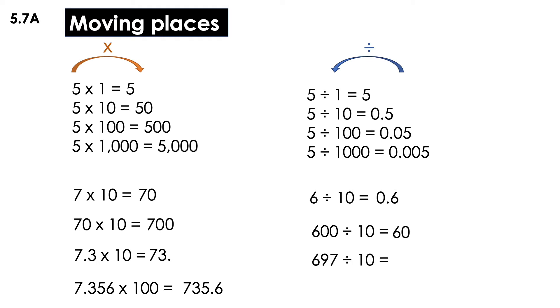697 divided by 10, I'm going to move my decimal place to the left. It's going to be 69.7, and now 697 divided by 1000. That means it will give me 697 thousandths.